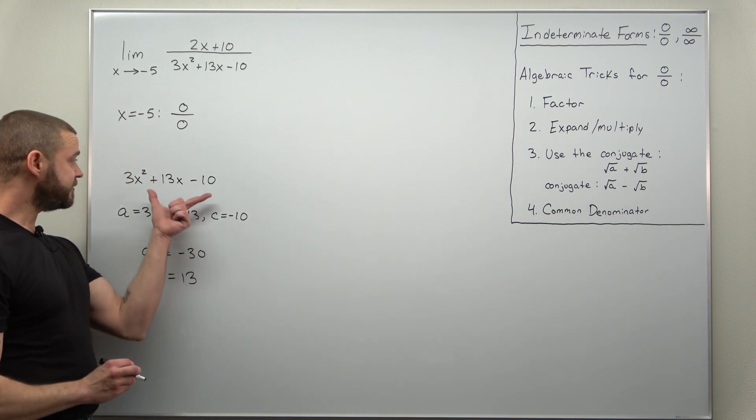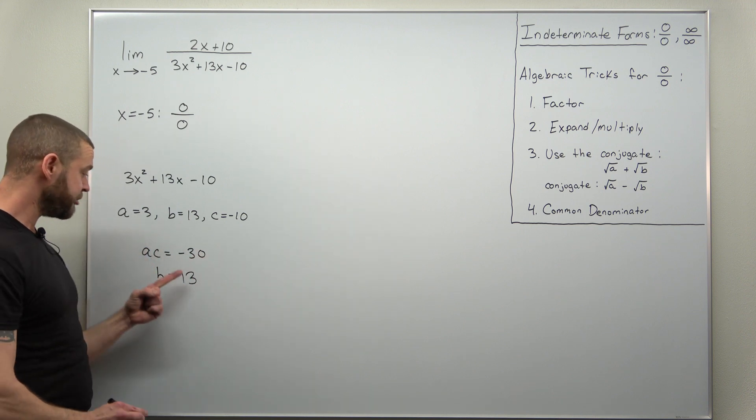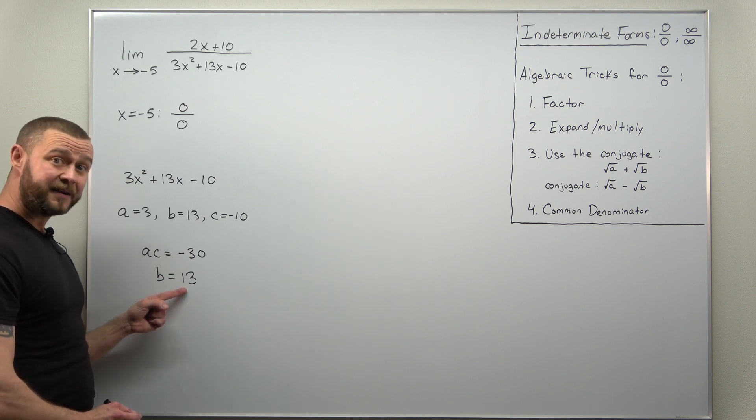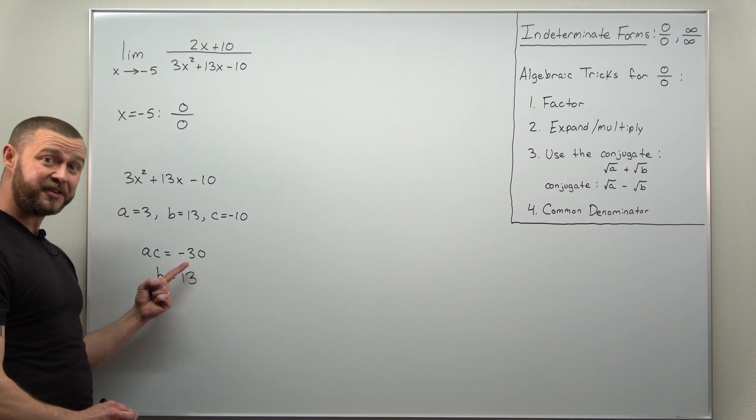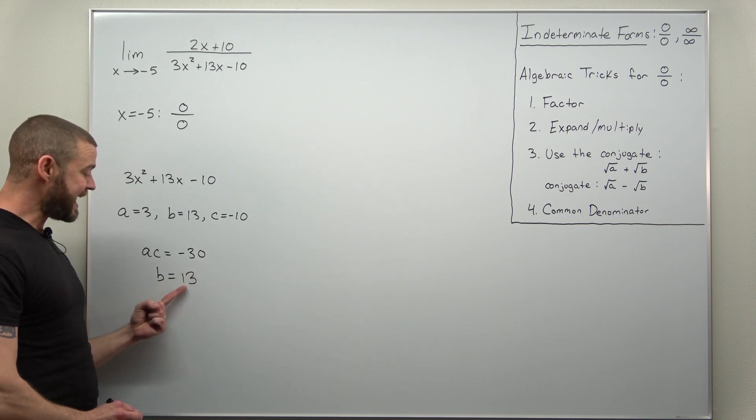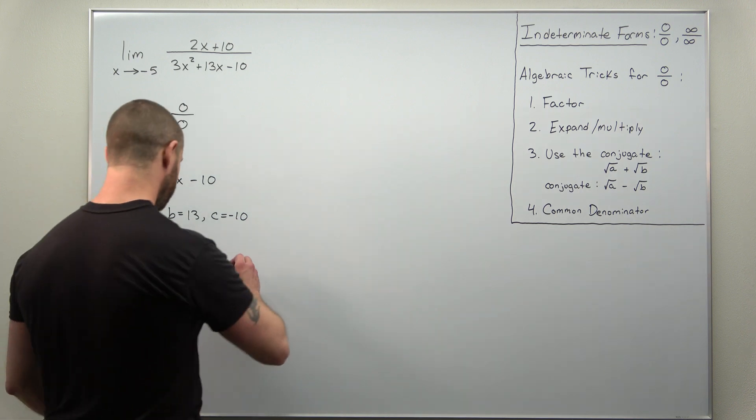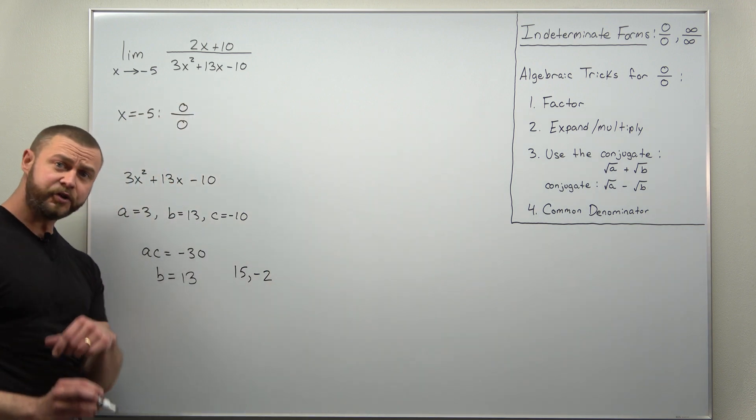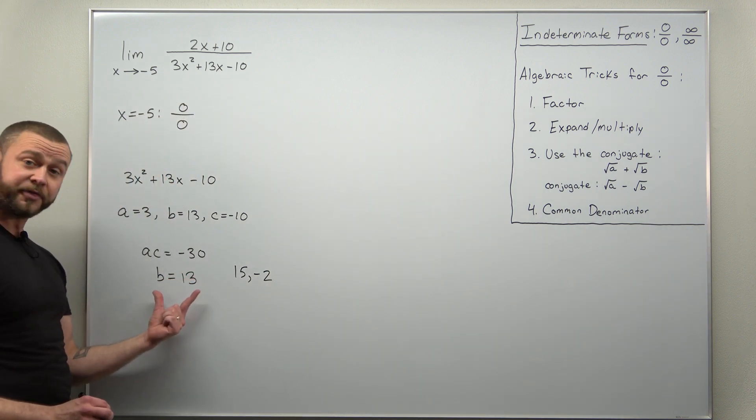Now if this is going to factor we try to take these two numbers and find integers that multiply to AC but add to 13. So think what multiplies to negative 30 and then adds to 13. I think 15 and negative 2 would work. They're going to multiply to negative 30 and when you add them you get 13.